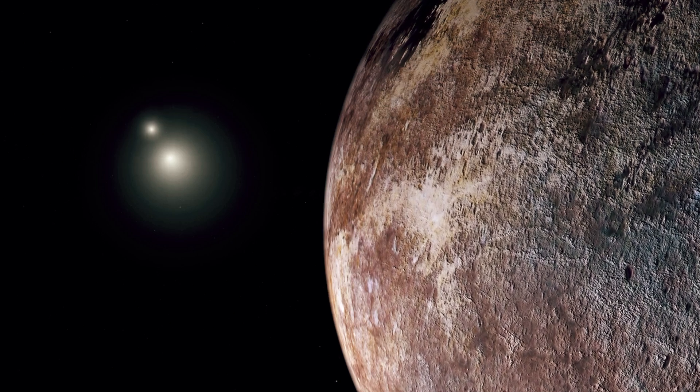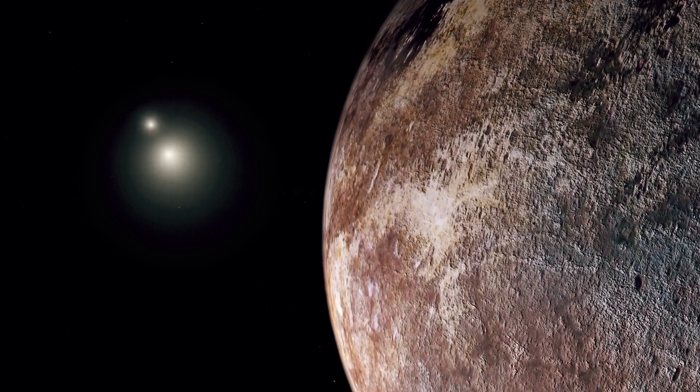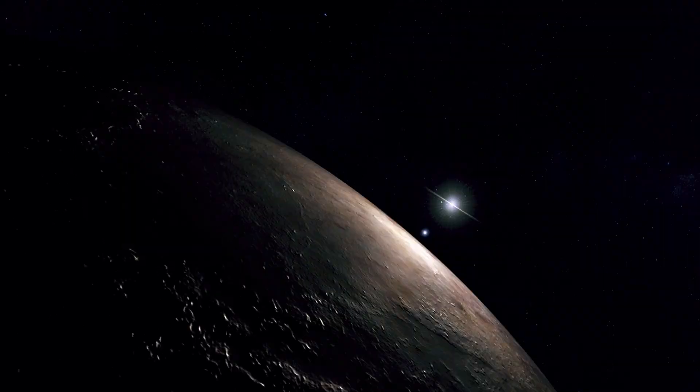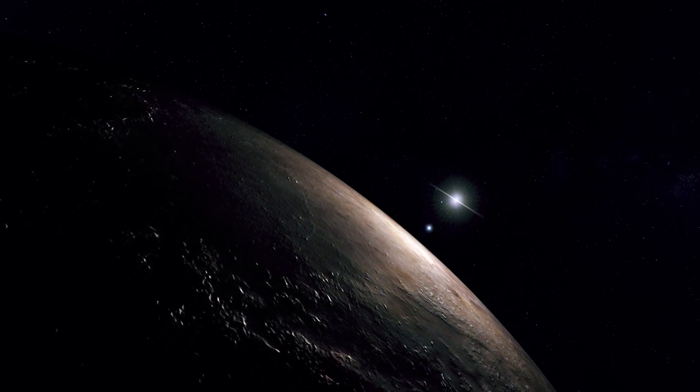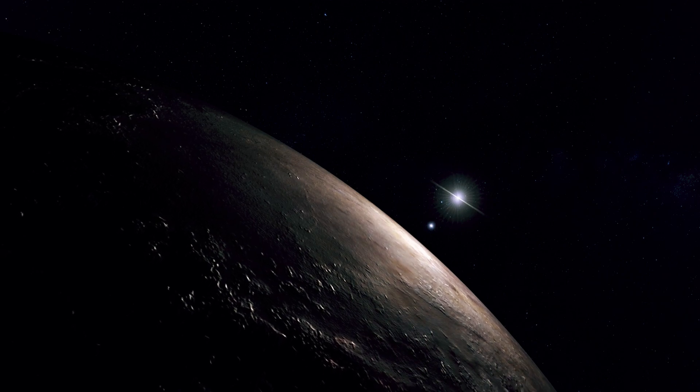Though it appears to the eye as a single star, Alpha Centauri is actually a triple star system. The two main stars are Alpha Centauri A and B. They orbit so close together that some call them star-crossed lovers.